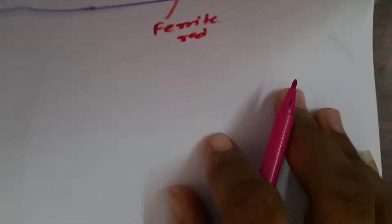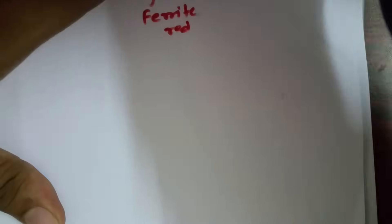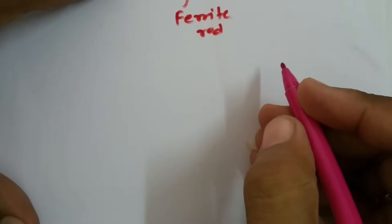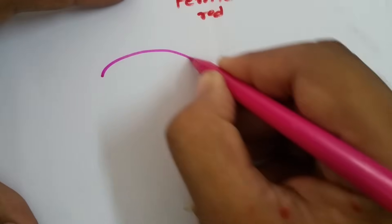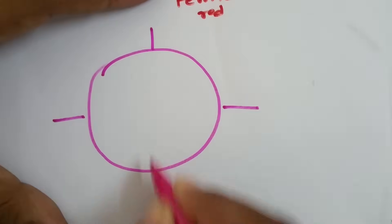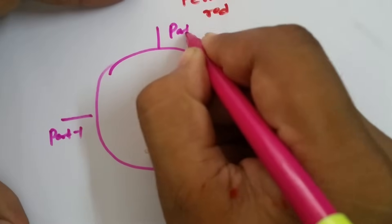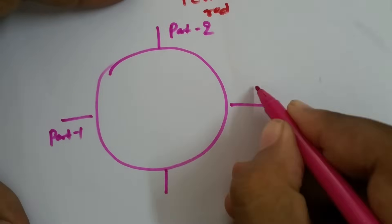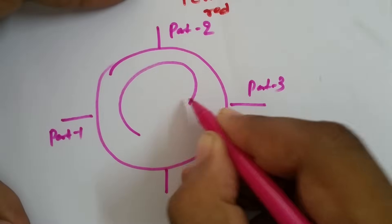Now let us understand one very interesting application of the circulator. We can use a circulator as a duplexer. This is a very practical application used in many devices, especially in communication systems. To illustrate this, let us consider a 4-port circulator — port 1, port 2, port 3, and port 4 — with the signal revolving in the clockwise direction.